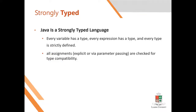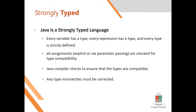All assignments are checked for type compatibility. So when the assignment is done — for example, x is equal to 5 — we can check the x variable as an integer value. If x is declared, the value 5 is treated as an integer. If there is a type mismatch, that is why Java has a strongly typed language.